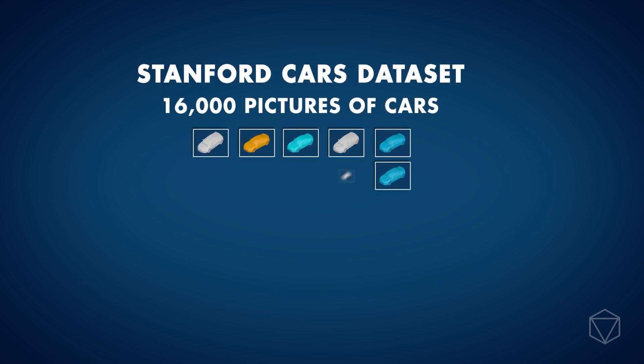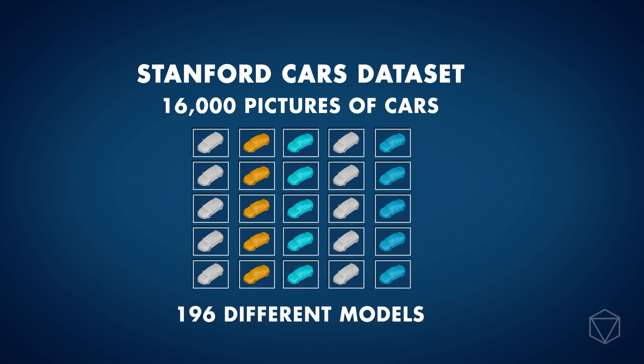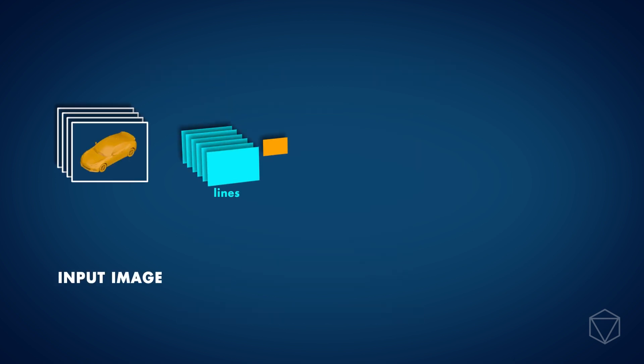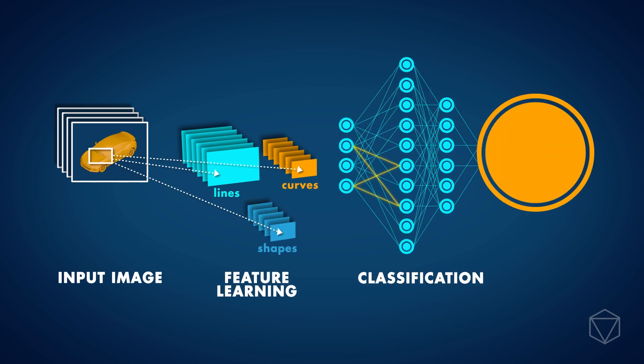The neural network was trained on the Stanford cars dataset which contains over 16,000 pictures of cars comprising 196 different models. Over time we could see the accuracy of predictions began to improve as the neural network learned the concept of a car and how to distinguish between different models.